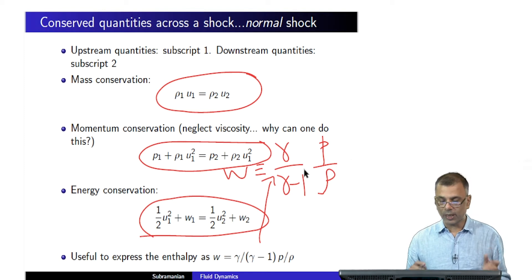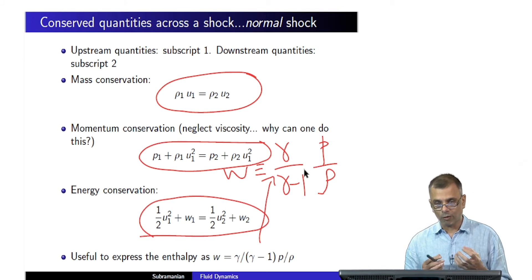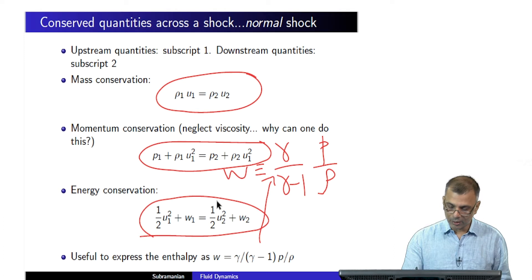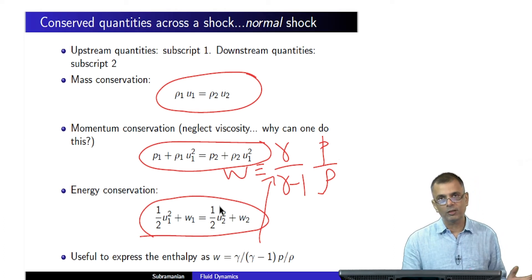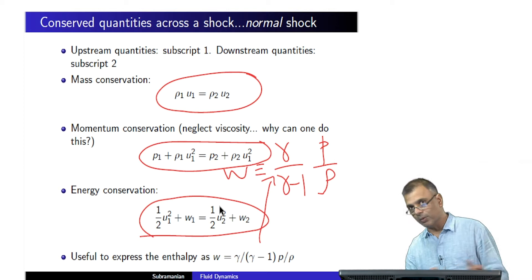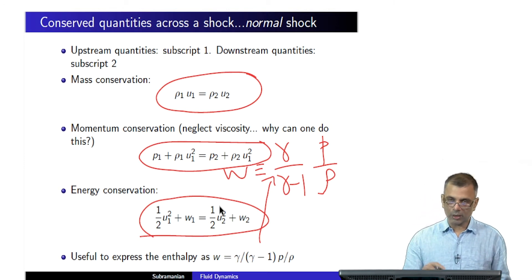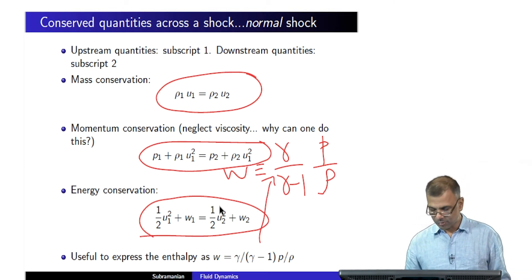Enthalpy relates to the internal energy per unit gram — the internal energy of the fluid — whereas the half u-squared term relates to the energy of the fluid due to the bulk motion. It's important to add them together, and so this represents energy conservation.